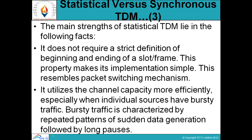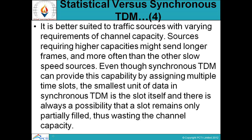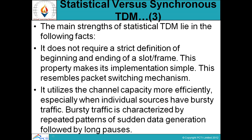The main strengths of statistical TDM are as follows. It does not require a strict definition of the beginning and ending of a frame. This property makes its implementation simple and resembles the packet switching mechanism — statistical TDM में हमें framing handle नहीं करनी होती है, means हमें यह check नहीं करना होता है कि data कहाँ से start और कहाँ end हो रहा है, जिससे overhead कम होता है।